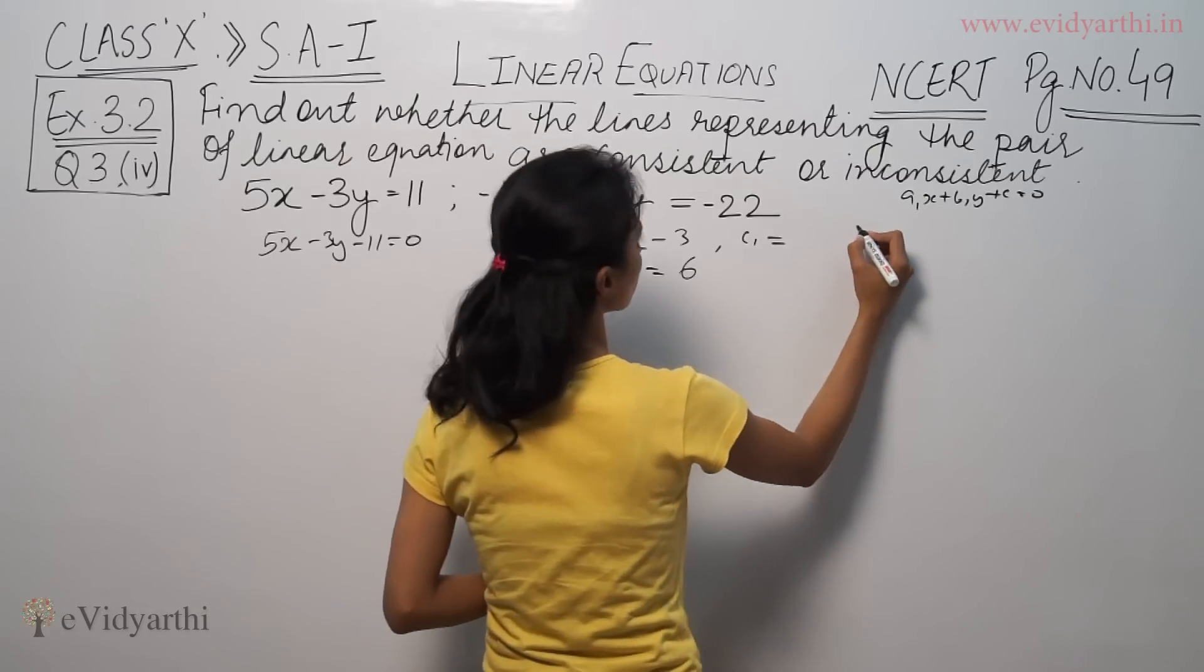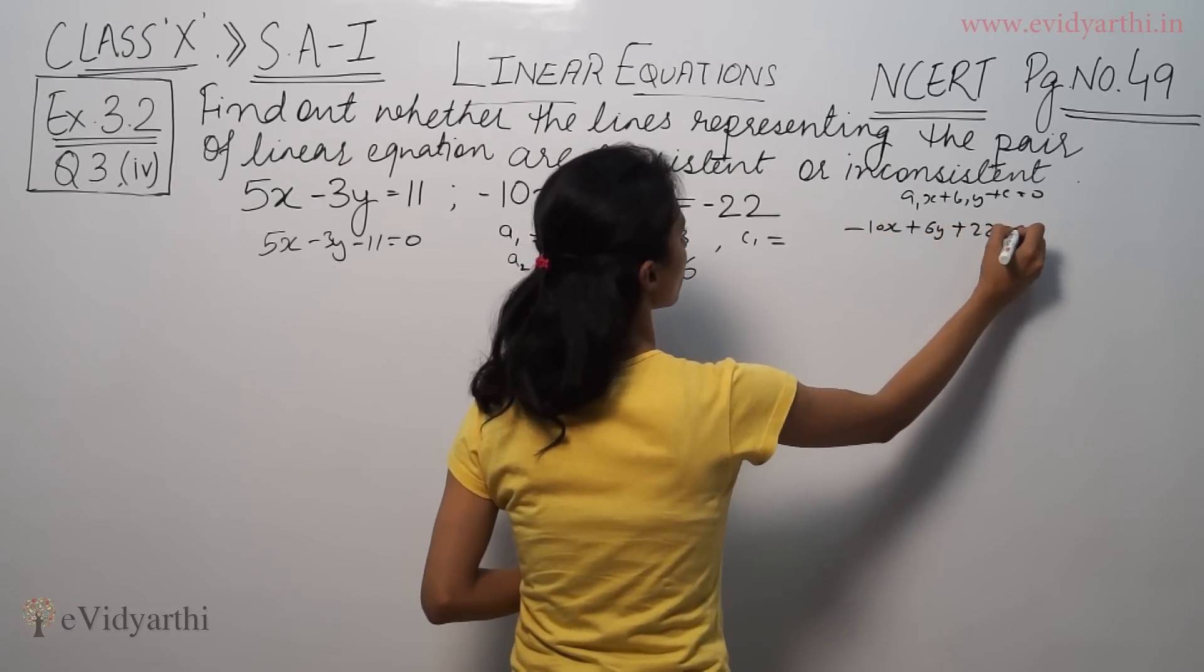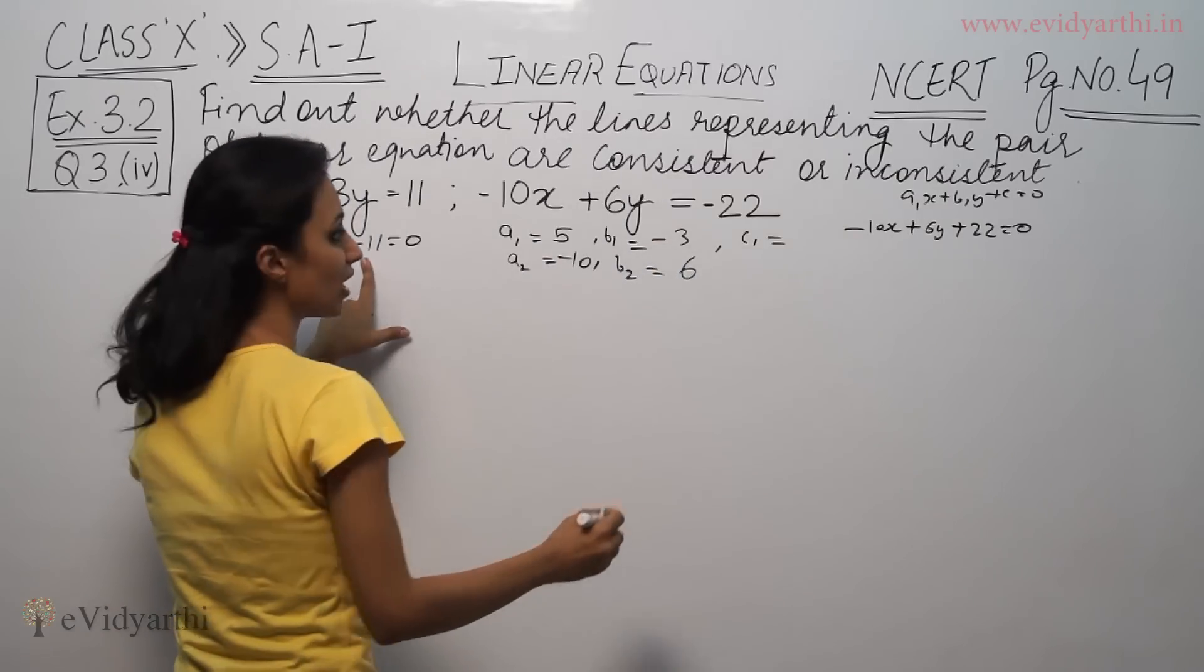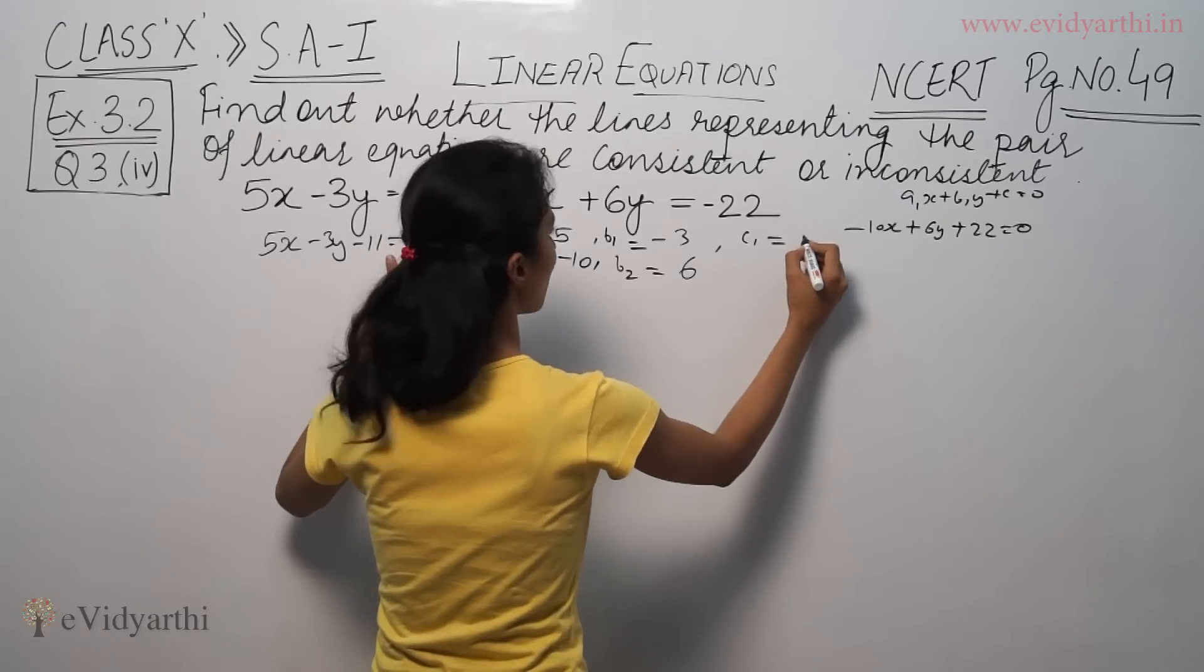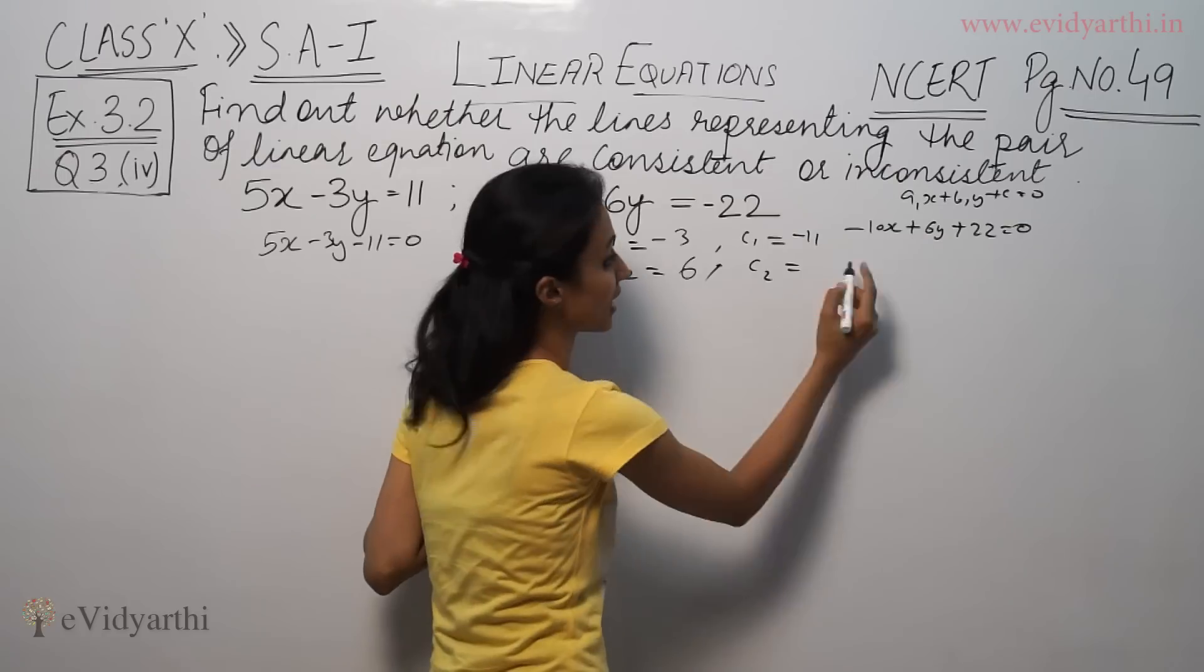Same way, if we change this equation, minus 10x plus 6y plus 22 equal to 0. So we have just c1 value here minus 11, c2 value here we have a constant term 22.